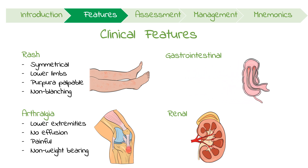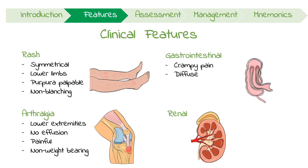Gastrointestinal issues mostly occur in the form of moderate, crampy abdominal pain. It's usually diffuse, with generalized tenderness secondary to IgA depositions in small vessels of the gut. Less commonly, acute abdomen can occur with bloody diarrhoea and intussusception. If there are no major complications, this should hopefully go away in about a day.